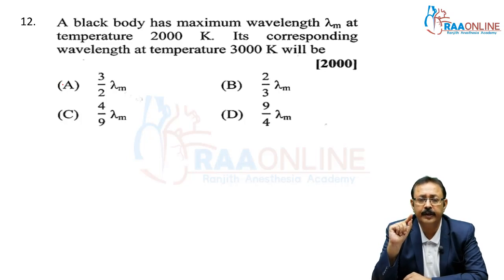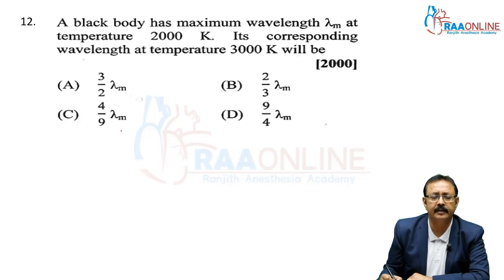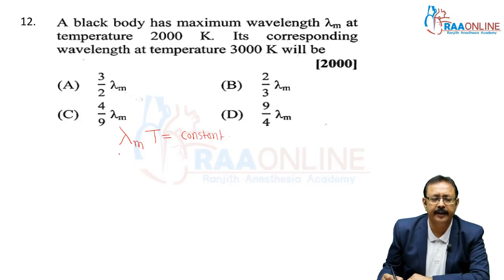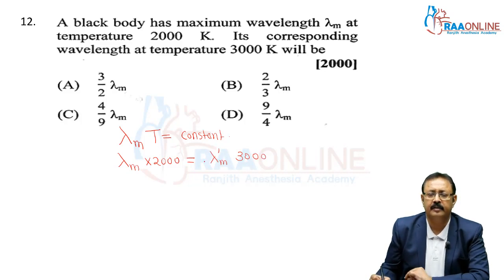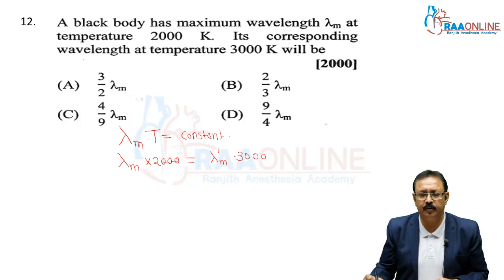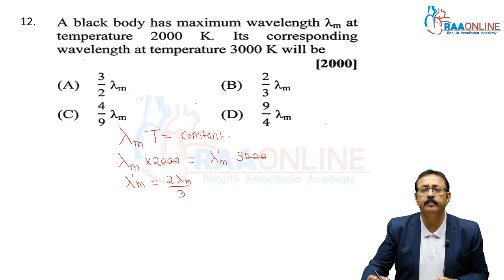This is a problem from Wien's displacement law. Wien's law states that the product of maximum wavelength and temperature is constant: λM × T = constant. Initially, λM × 2000 = constant. At 3000 K: λM_new × 3000 = λM × 2000, so λM_new = 2λM/3. We go with option B.